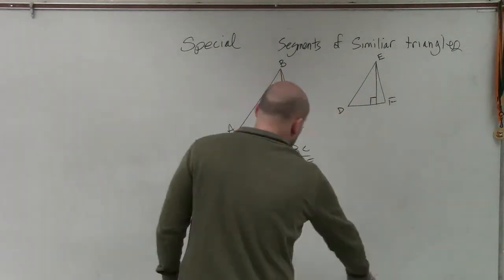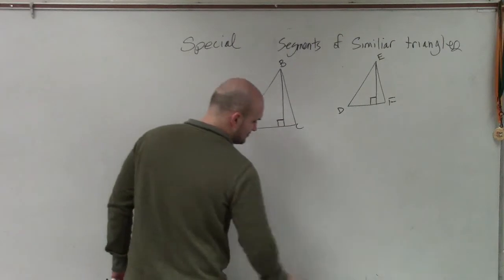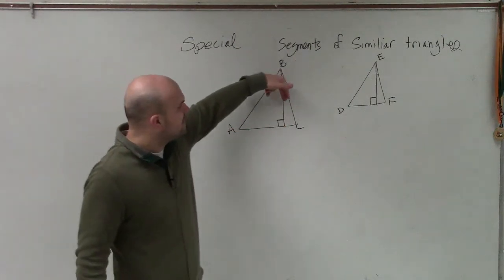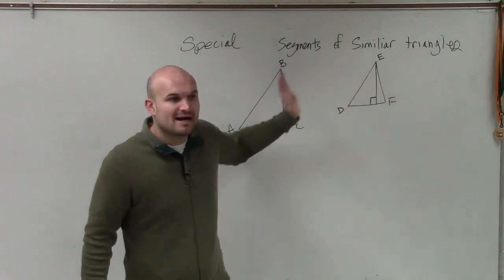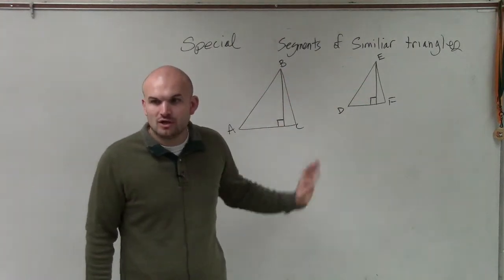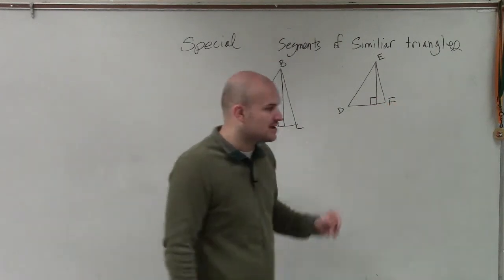So what the special segments tells us is that now, these two altitudes, which are corresponding, are proportional to corresponding sides of our similar triangle.